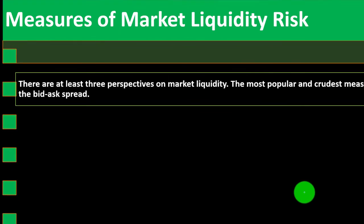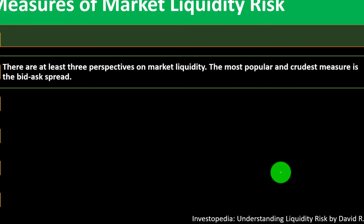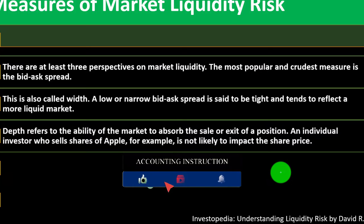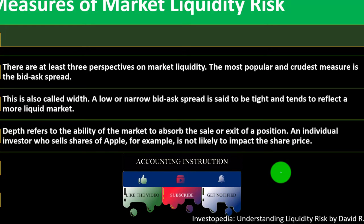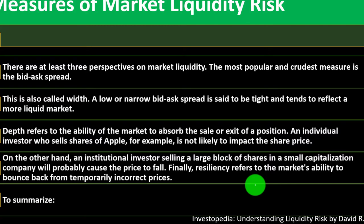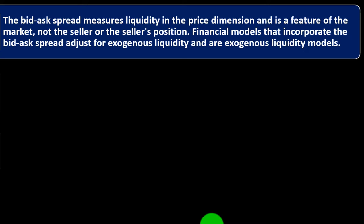Illiquidity is generally a problem that can be solved with more time. There are at least three perspectives on market liquidity. The most popular and crudest measure is the bid-ask spread, also called width. A low or narrow bid-ask spread is said to be tight and tends to reflect a more liquid market. Depth refers to the ability of the market to absorb the sale or exit of a position. An individual investor selling shares of Apple, for example, is not likely to impact the share price. Resiliency refers to the market's ability to bounce back from temporarily incorrect prices. The bid-ask spread measures liquidity in the price dimension and is a feature of the market, not the seller or the seller's position.